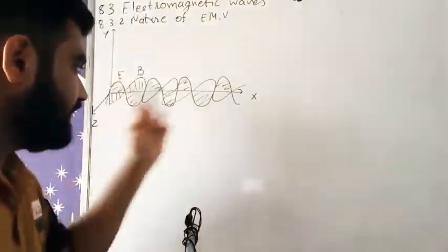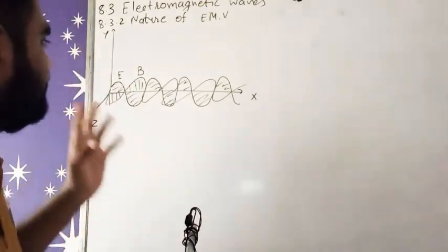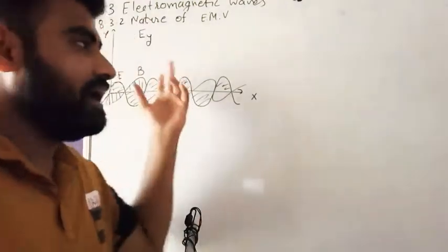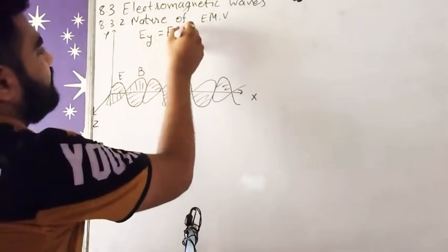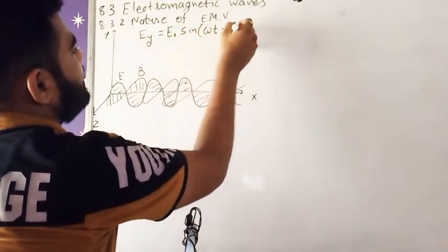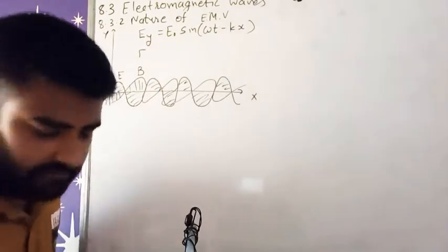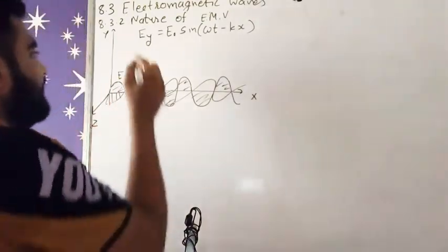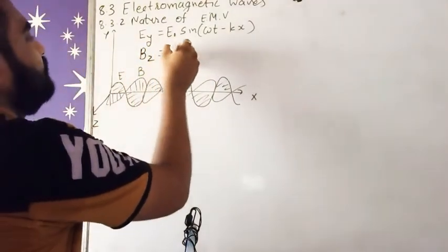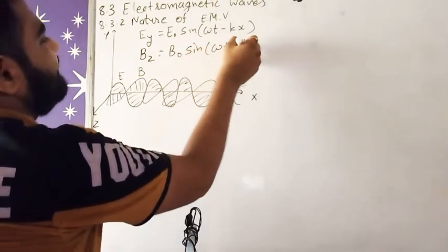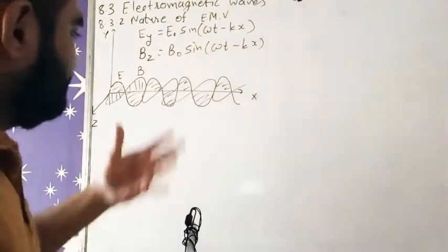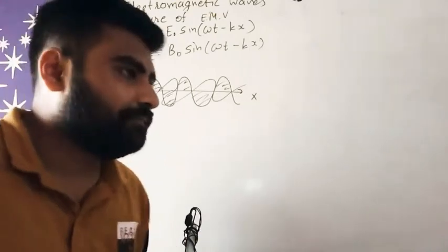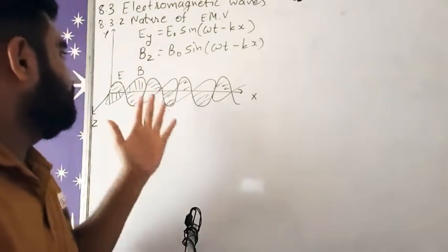So this is our E and this is our B. This is our electric field in y direction and the formula is E_y = E₀ sin(ωt - kx). This is our electric field in y direction. And agar mujhe magnetic field ki formula likhni ho, then magnetic field formula—their oscillations are in z direction—so B_z = B₀ sin(ωt - kx).